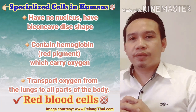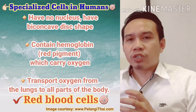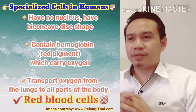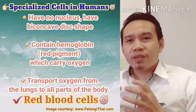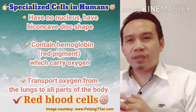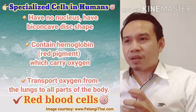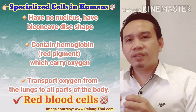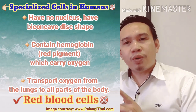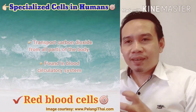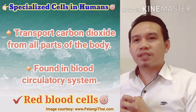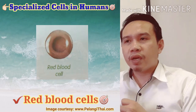The next specialized cell is the red blood cell. Red blood cells are part of the human or animal circulatory system. They have no nucleus, have a biconcave disc shape, and contain hemoglobin — a red pigment which carries oxygen. Red blood cells transport oxygen from the lungs to all parts of the body, and transport carbon dioxide from all parts of the body back to the lungs.